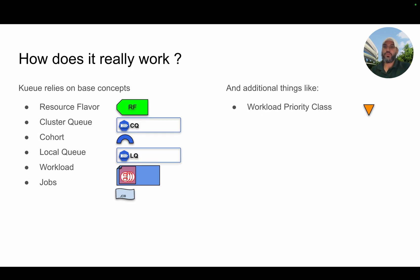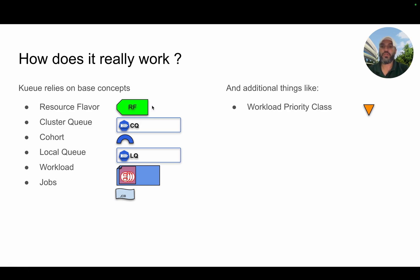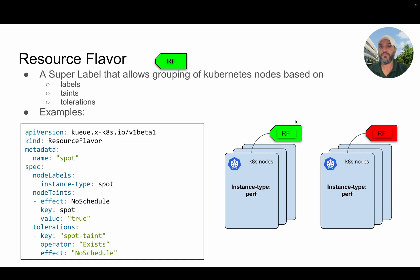So how does Kueue really work? It's quite simple — it relies on a few basic concepts we will go into detail on right now. The concepts we will look at are: resource flavor, cluster queue, cohort, local queue, workload, jobs, and an additional concept called the workload priority class.